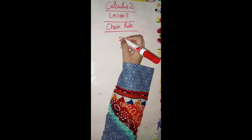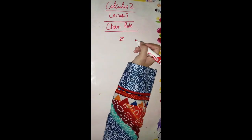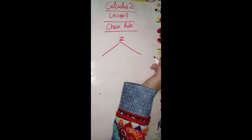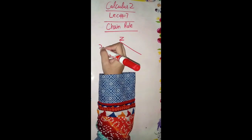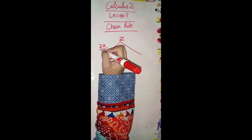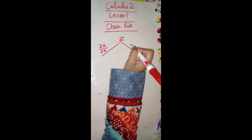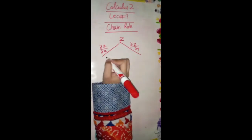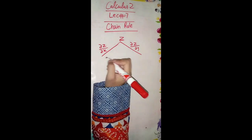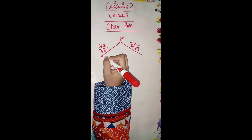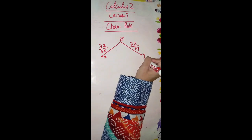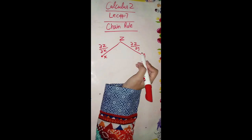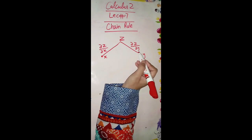Basically we have one variable z. We can take two derivatives: ∂z/∂x and ∂z/∂y. Now for ∂z/∂x we are reaching at x and y. For x we can take ∂z/∂x, and for y we can take ∂z/∂y.